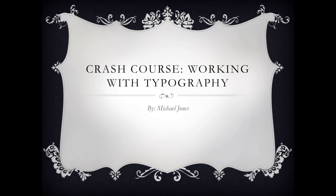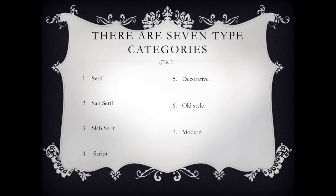Hello and welcome to this crash course on working with typography. There are seven type categories: serif, sans serif, slab serif, script, decorative, old style, and modern. Let's break it down.